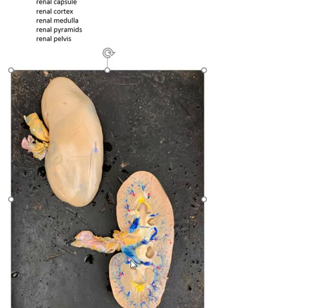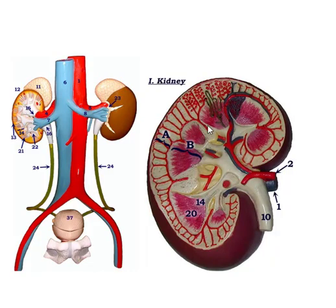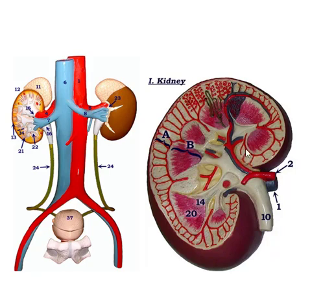On this model it's easier to identify things because of the pretty colors. Here's the cortex — the outer part. Here's the medulla. There are your pyramids. The tip of each pyramid kind of looks like a nipple, so they call those papilla — they're in your medulla. Here's your renal pelvis. And here's your ureter, coming down into the bladder. Your kidneys sit in a pocket of fat.